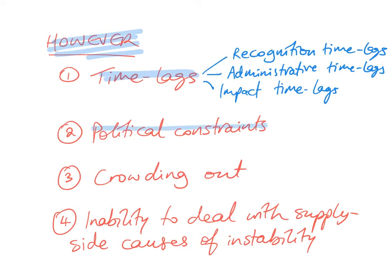There are also political constraints. Governments sometimes fear raising taxes too much, or increasing government spending too much and hence borrowing too much, which might upset people as it adds to the national debt. Different political parties also have different objectives, so there are always political constraints. Presidents and Prime Ministers want to be re-elected, so they might be afraid to adopt a contractionary fiscal policy.